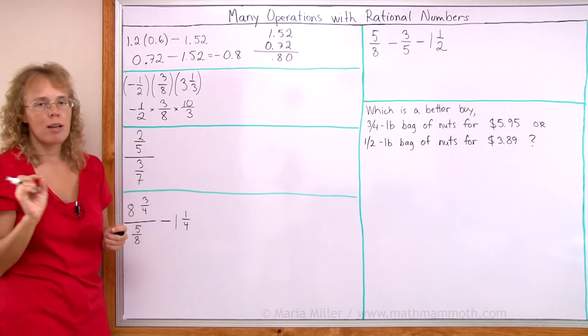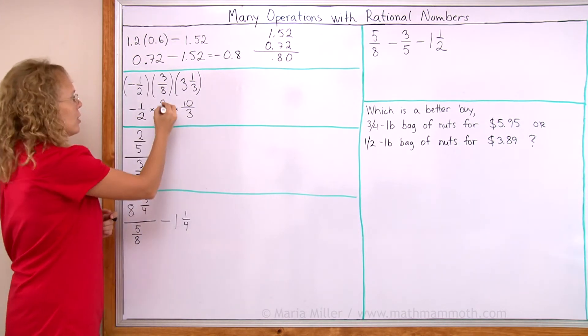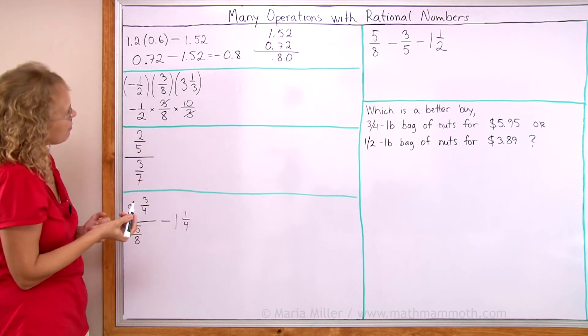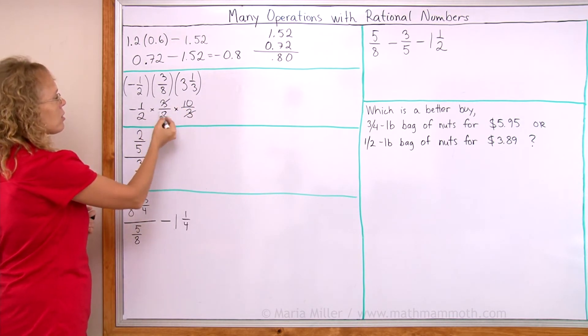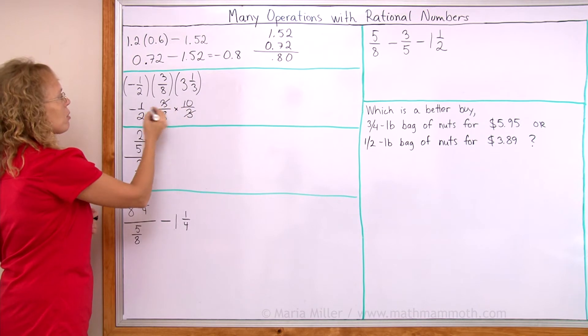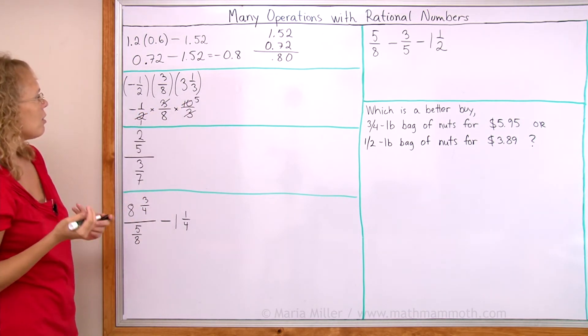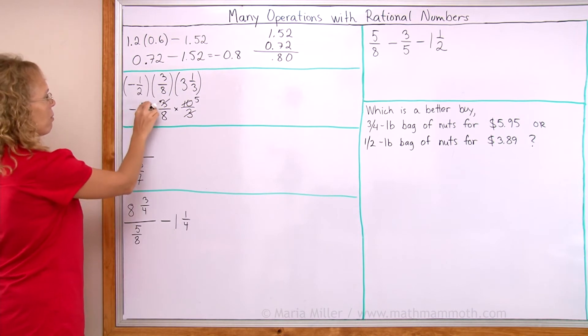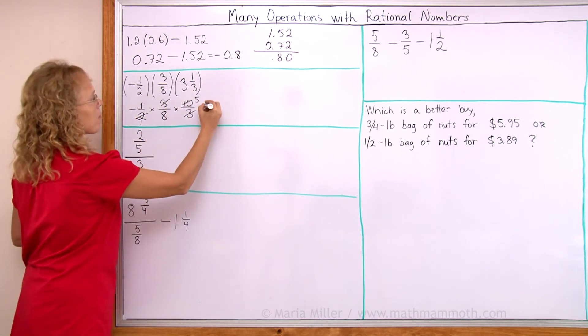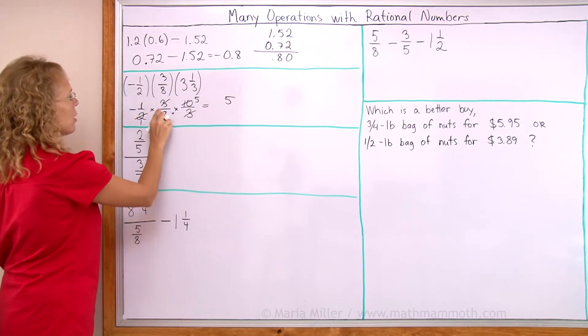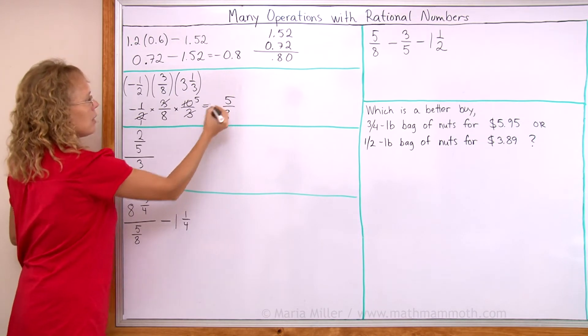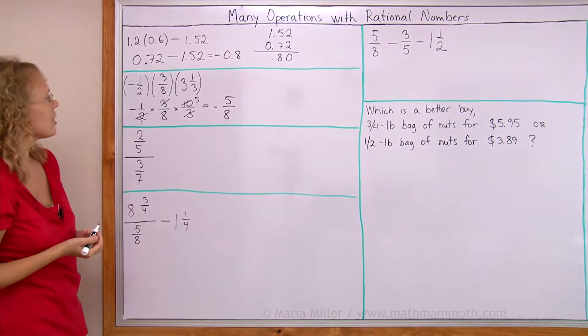And now here, before I multiply, I will simplify. Here's a 3 and 3. They cancel out. Then there's 10 and 8 or 2. 10 and 2, they are both divisible by 2. So this leaves 1. This leaves 5. And now nothing else simplifies. On the top, I have 1 times 1 times 5. And then here on the bottom, just 8. And negative. Negative 5 eighths is the answer.